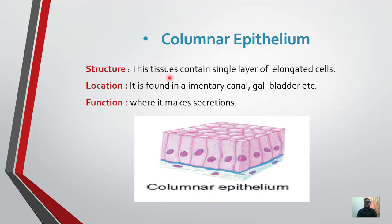Columnar epithelium. Structure: this tissue contains a single layer of elongated cells. Location: it is found in the alimentary canal, gallbladder, etc. — including the mouth, esophagus, small intestine, large intestine, rectum. Columnar epithelium is present all along this alimentary canal. Function: it makes secretions of different types.